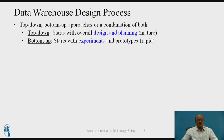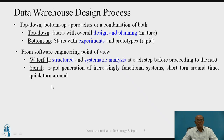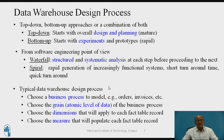Let us see the design process. There are two approaches: top-down and bottom-up. In top-down, we see the overall design and planning. In bottom-up, data is collected from experiments or prototypes. The top-down approach is similar to software engineering's waterfall method — structured and systematic analysis of each step before proceeding to the next. Typically, data warehouse design process contains business process, grain, dimensions of the records, and count of the records.